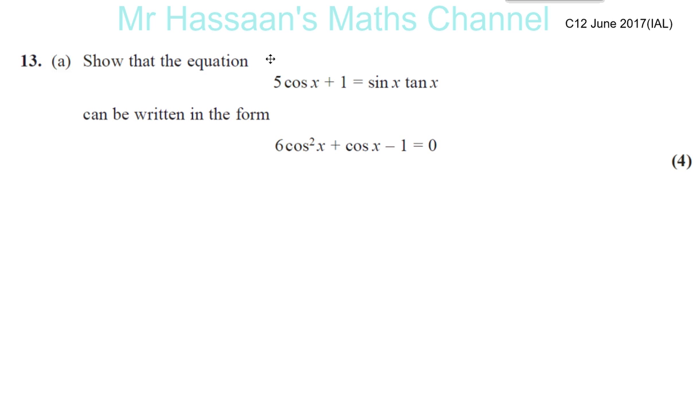I was asked to do 13 part b, but I'll do the whole thing. We're asked to show that this equation 5 cosine x plus 1 equals sine x tan x can be written in this form. So you see what's happened here is basically it's been reduced, it's been changed, so everything now says cosine x.